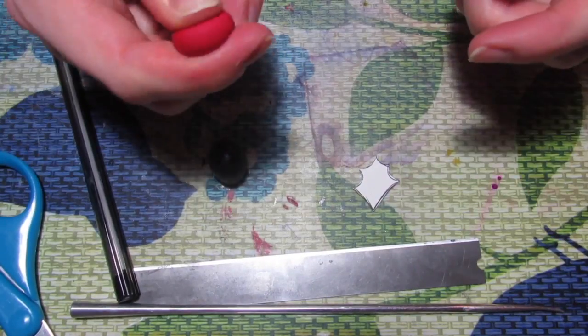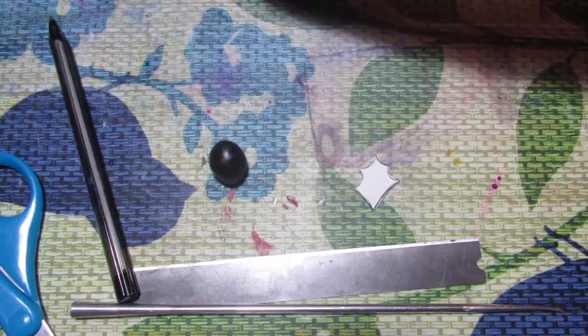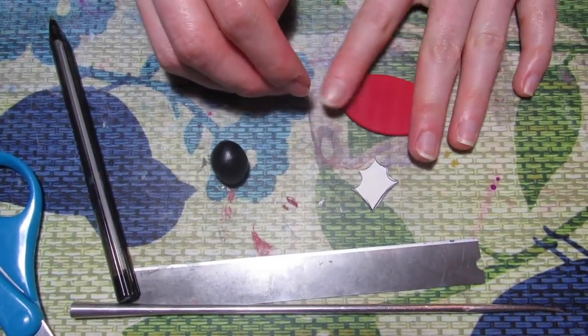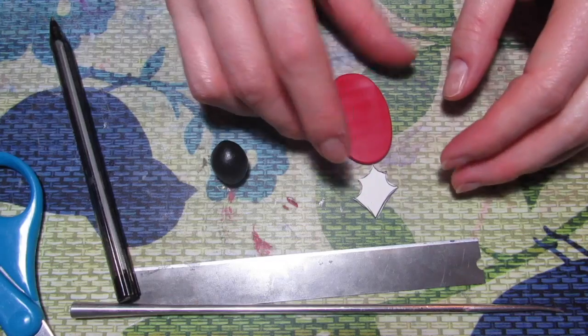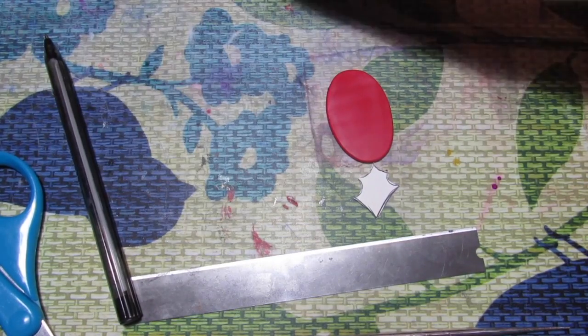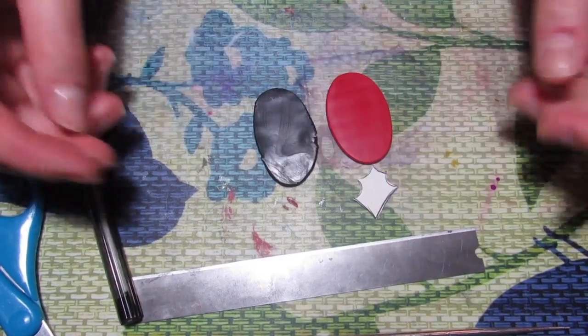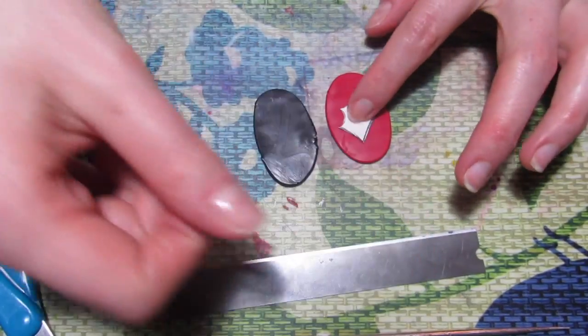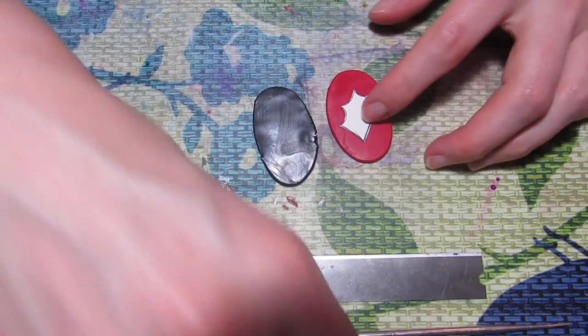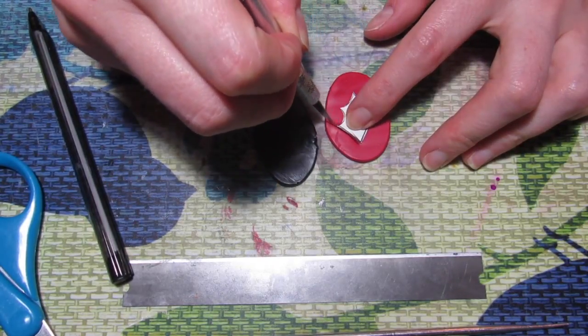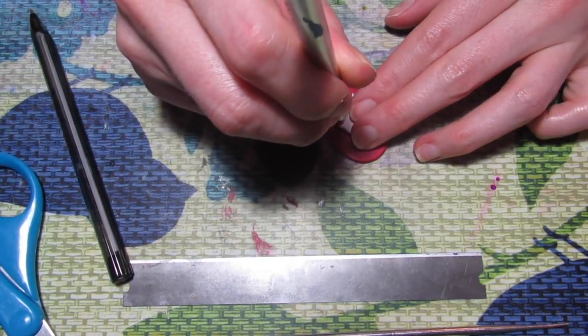Once you have your template ready, you're going to take your red ball of clay, make sure it's nice and conditioned, and roll it out on your pasta machine on probably a 1 to a 3 setting, and also the black piece of clay. You're going to place the template onto one of the pieces and cut it out with an exacto knife or whatever type of blade you have.